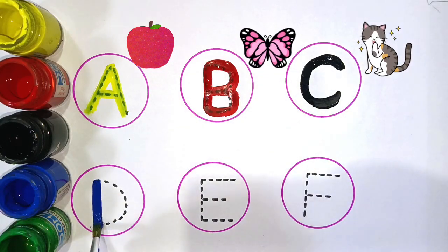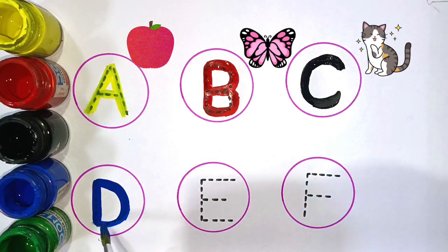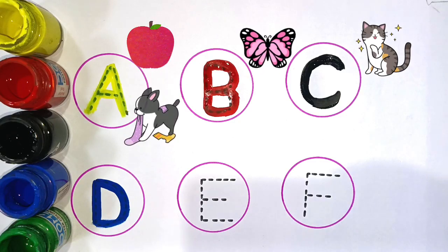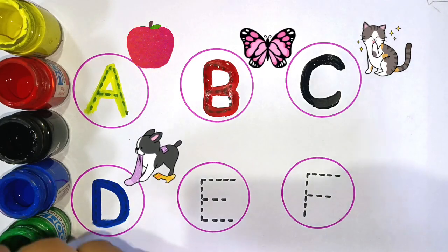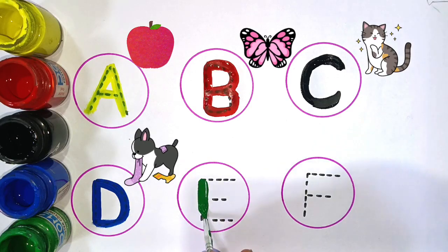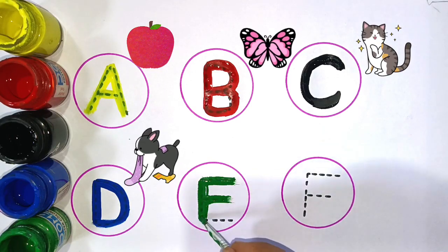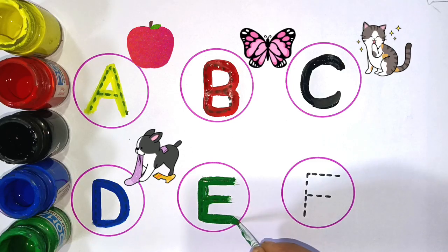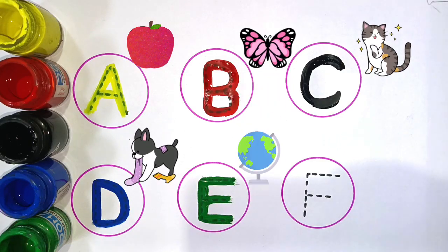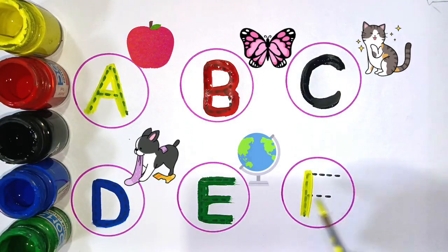D. D for dark. Next green color. E. E for earth. Next yellow color.